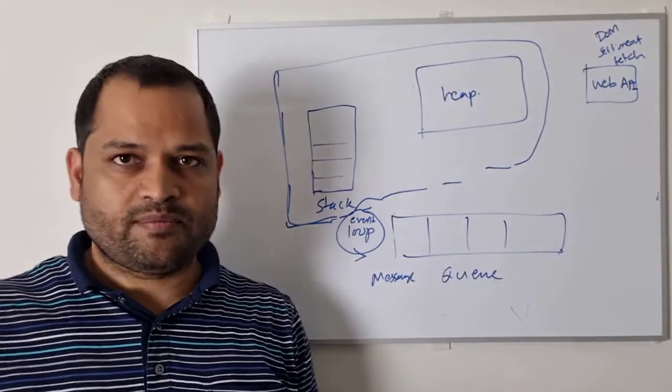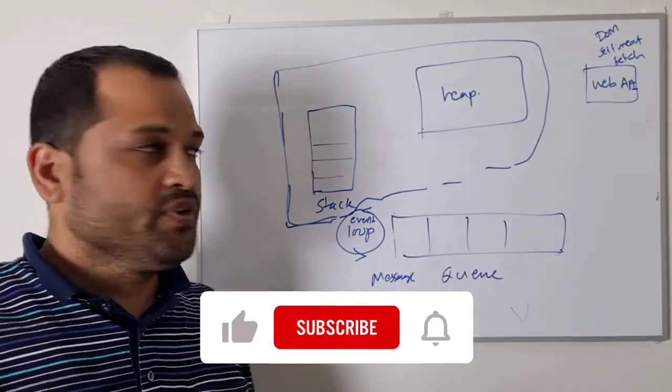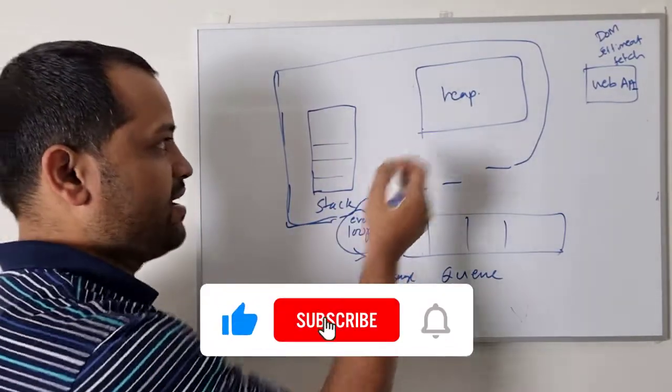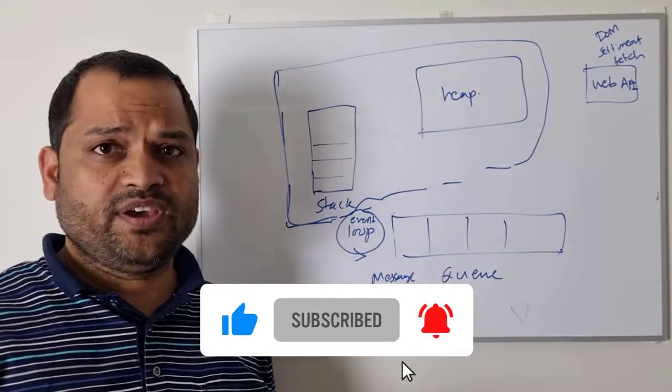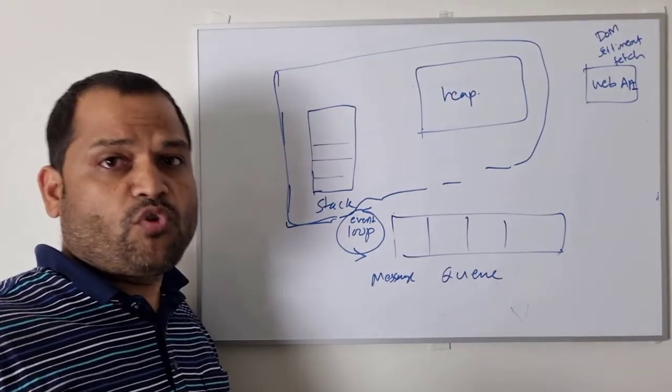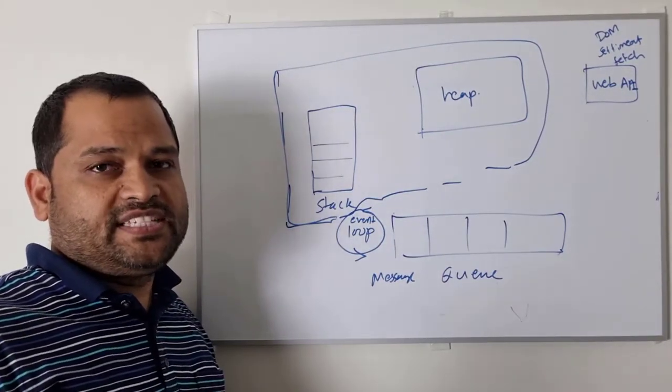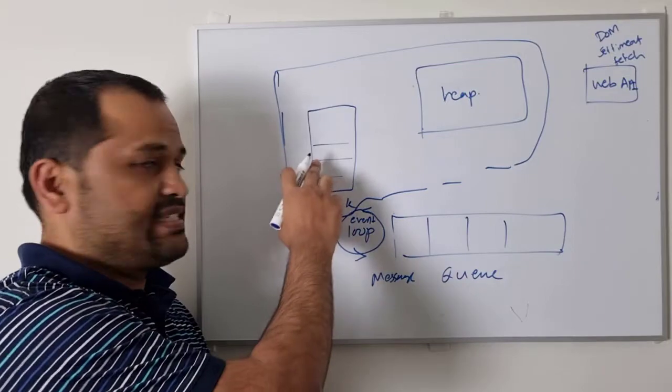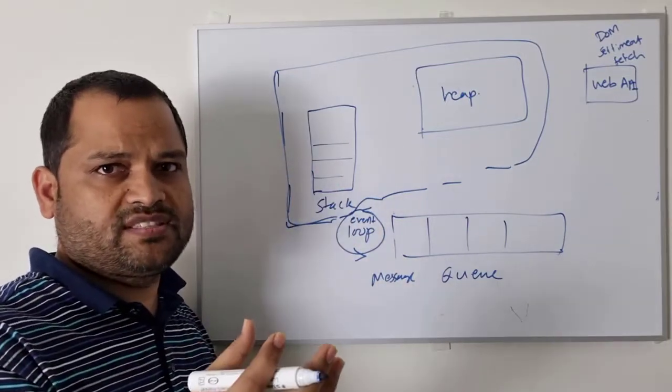So if you are coming from the Java programming language or C#.NET, you must have heard these terms stack and heap. Stack is basically where the execution is happening and that's where the functions get called, execution environments are created. And basically the primitive values are stored on this stack. So it is basically a memory space in the computer.